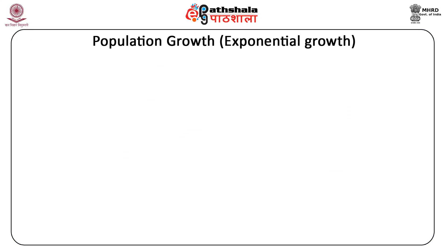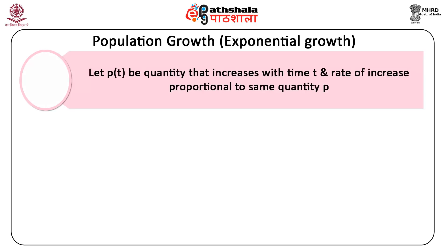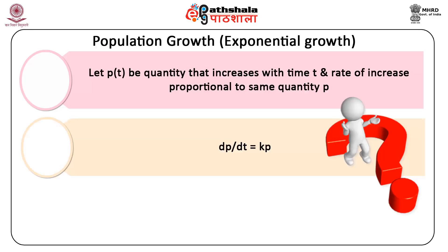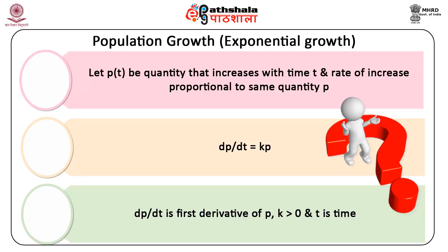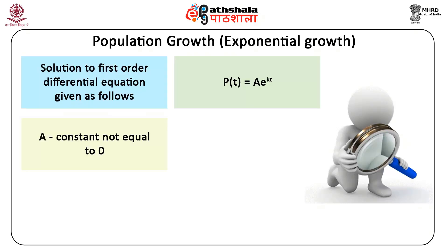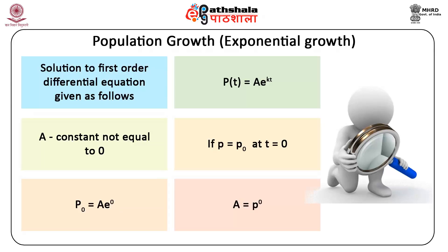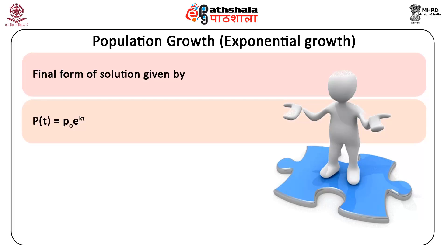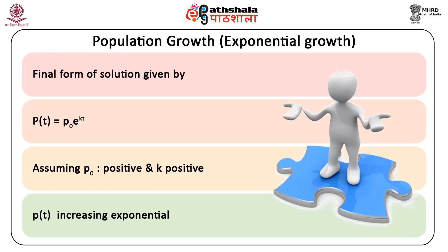Now we will discuss population growth or exponential growth. Let p(t) be the quantity that increases with time t, and the rate of increase is proportional to the same quantity p: dp/dt = kp, where dp/dt is the first derivative of p, k > 0, and t is time. The solution to this first-order differential equation is: p(t) = A · e^(kt), where A is a constant not equal to zero. If p = p0 at t = 0, then A = p0, and the final solution is p(t) = p0 · e^(kt). Since p0 is positive and k is positive, p(t) is an increasing exponential.